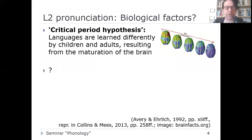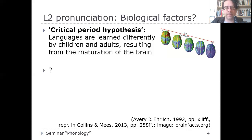Avery and Ehrlich mention biological, sociological, and other factors that play a role. One very influential concept is the critical period hypothesis, which relates to biology and how our brains develop. It states that languages are learned differently by children and by adults, depending on how mature the brain is at the moment of learning. A lot of time has passed since 1992 and there have been many advances in brain science, so the critical period hypothesis probably paints a picture that is much too simple.